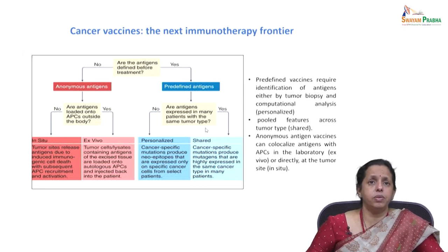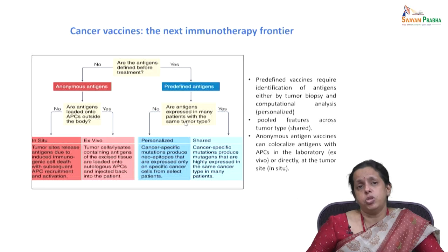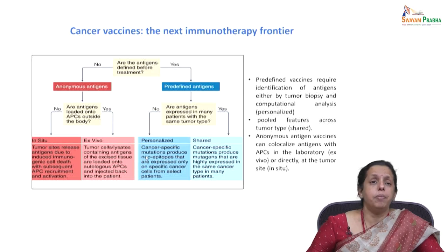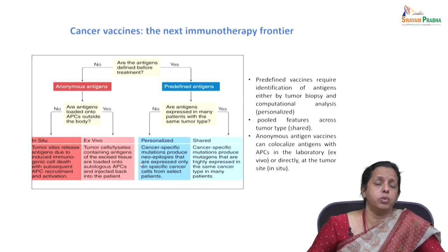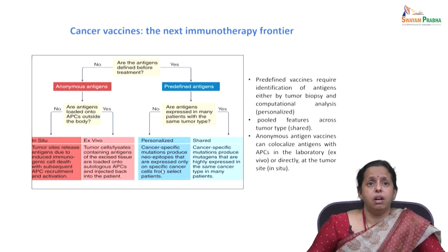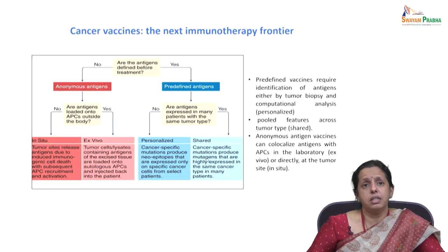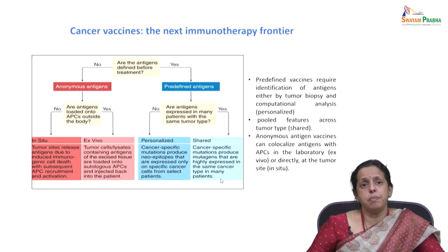If the same antigens are expressed by many patients with the same tumor type, it is not a personalized approach. However, cancer-specific mutations produce novel epitopes — neo-epitopes or neo-antigens — which are specifically expressed only on specific cancer cells from select patients. Sometimes these are shared across a broad group, or cancer-specific mutations produce antigens highly expressed in the same cancer type across many patients.